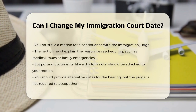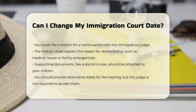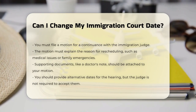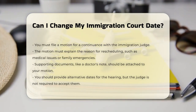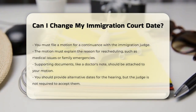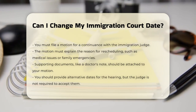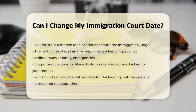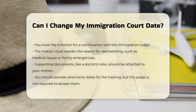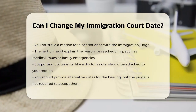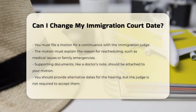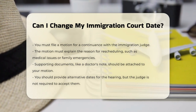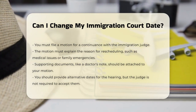You need to file a motion for a continuance with the immigration judge. In your motion, you must explain why you need to reschedule the hearing. This could be due to a medical reason, a family emergency, or any other valid reason that shows you would face extreme hardship if you had to attend the currently scheduled hearing. You should attach any supporting documents, like a doctor's note, to your motion.